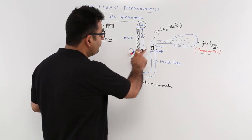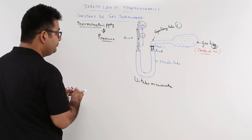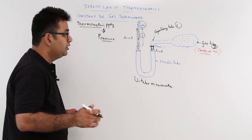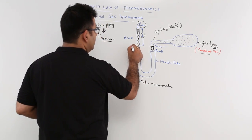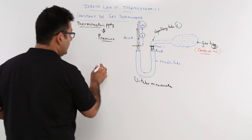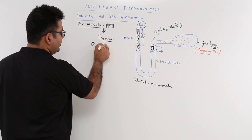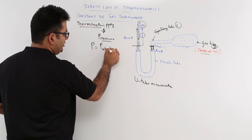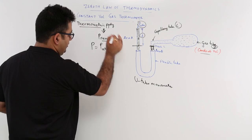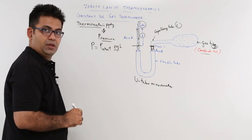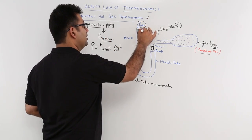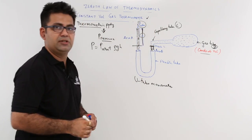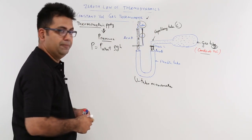To measure the pressure at mark L, pressure P is a combination of atmospheric pressure plus ρgh. So this is the atmospheric pressure and this is the pressure due to this height or this column of mercury.